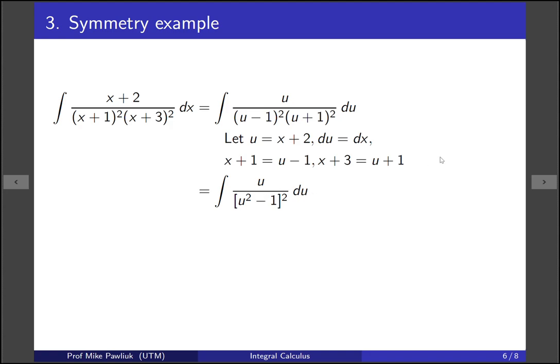So we can actually make a second substitution. This one won't be linear though. We'll make the substitution v equals u squared minus 1 and then dv will be 2u du. Making all the substitutions here gives us this. Does that look like an integral that you know how to solve? I hope so.